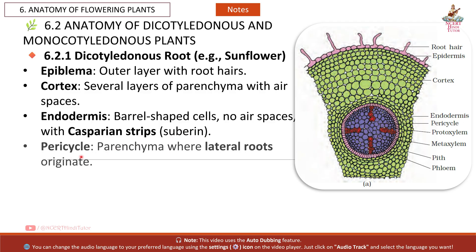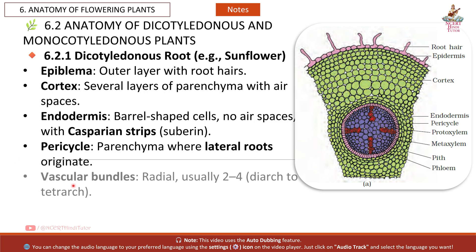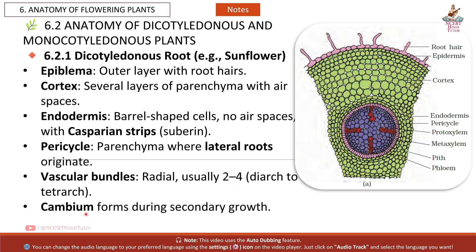Continuing the dicot root: the pericycle is made of parenchyma and is where lateral roots originate. Vascular bundles are radial, usually 2–4, described as diarch to tetrarch. Cambium forms during secondary growth. The pith is small or absent.